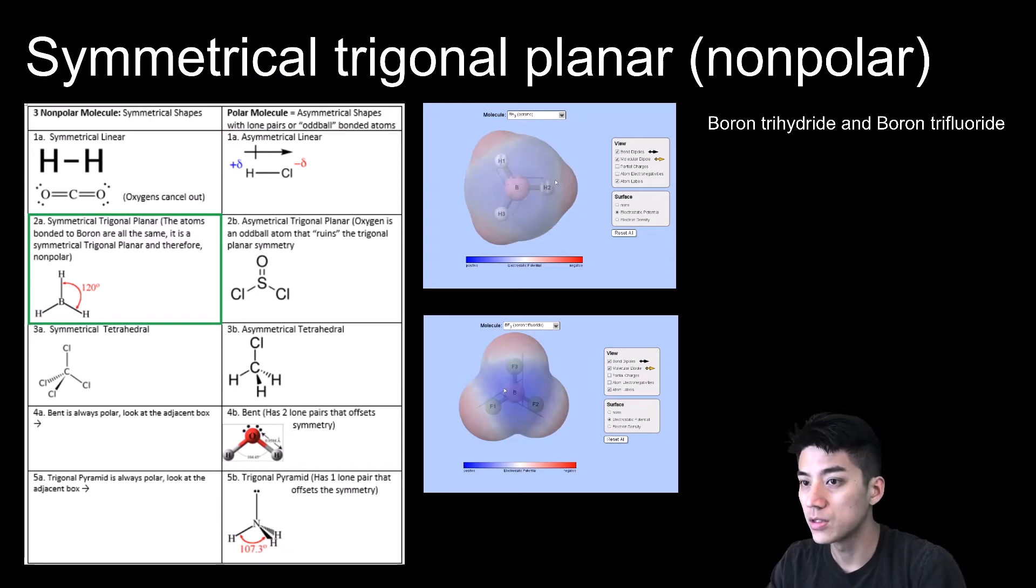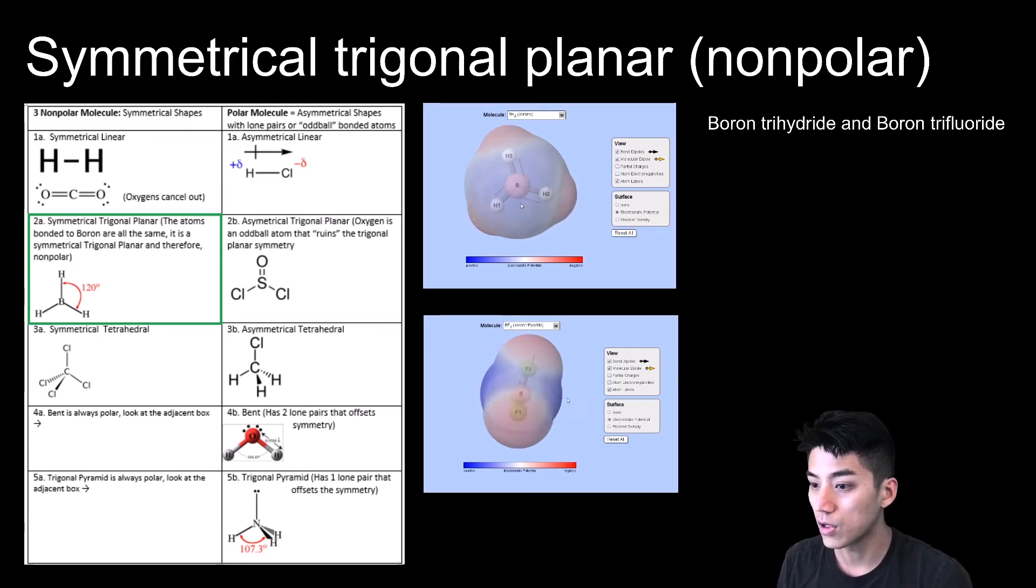Here are two examples that are symmetrical and trigonal planar, which means it will be nonpolar. So I've got boron trihydride and boron trifluoride. So because the atoms on the peripheries are all the same, okay, so in the top example, you have boron trihydride. Those are three hydrogens, so the dipoles just cancel out. So it leaves you with a nonpolar molecule. And the same thing occurs in the looping image below. You have boron trifluoride. So you have three fluorines, which are all canceling each other out. So even though those are polar covalent bonds, overall, the whole entire molecule has symmetry. And because it's symmetrical, that means it's going to be nonpolar overall.